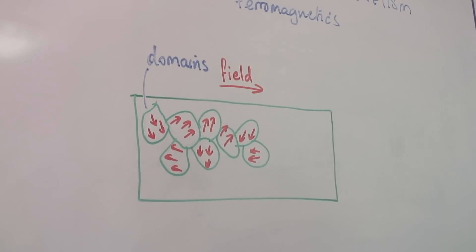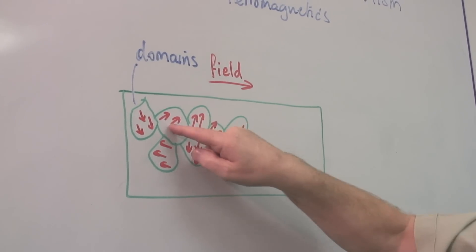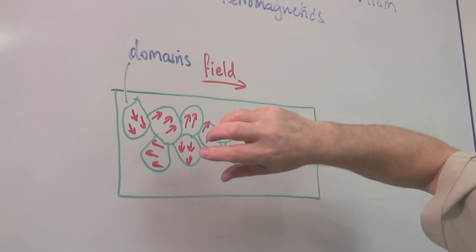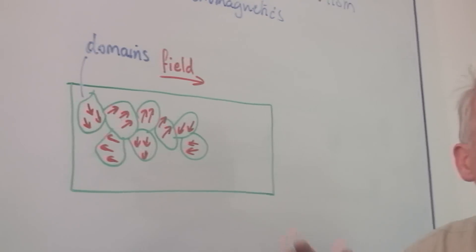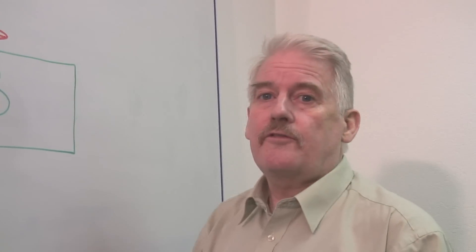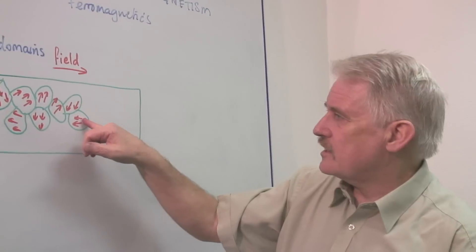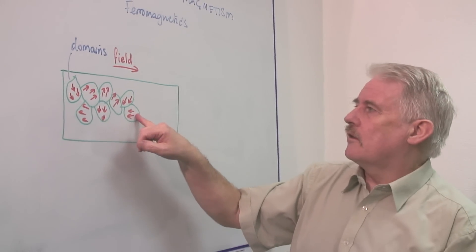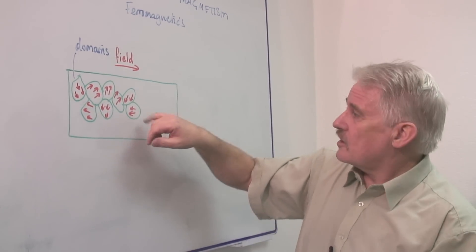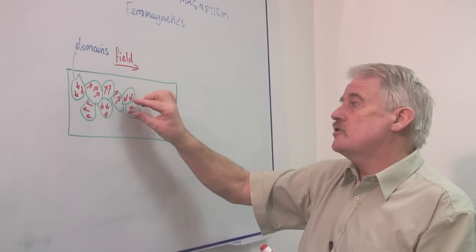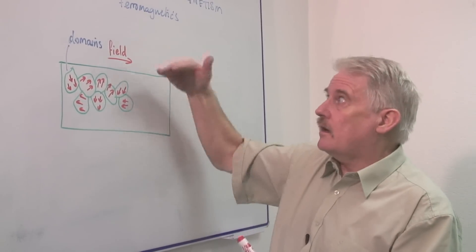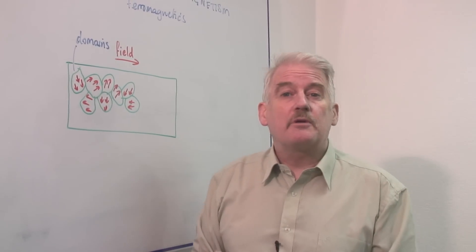And then eventually when the field is large enough, these domains start snapping into the one direction of the field. So for example this one will at some point or other suddenly orientate totally the opposite way in line with the magnetic field that is being applied to it.